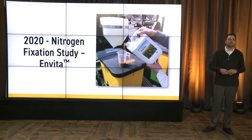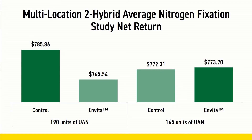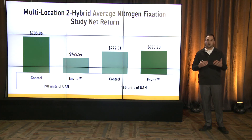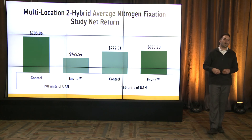Looking at our nitrogen fixation study where we tested Invita at a rate of 3.2 ounces per acre applied in-furrow at planting — found on page 118 of the 2020 PFR book. Invita has a cost of $9.95 per acre. At the higher nitrogen rate we saw a negative yield and obviously a negative ROI. At the 165 rate, however, we saw a positive yield and a positive ROI — perhaps not an add-on product, but one to use alongside reduced nitrogen.